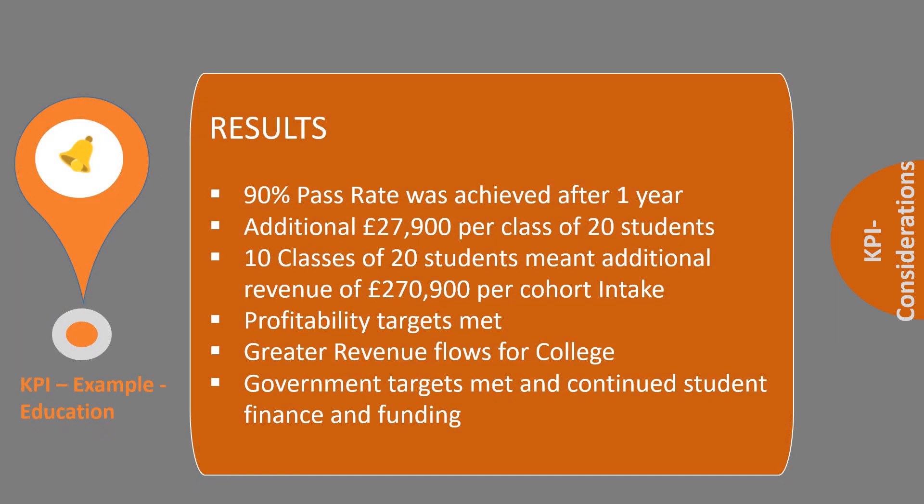The results of this were that after one year, putting all these additional support packages, changes, processes and staff training into practice, we were attaining per class a 90% pass rate. On a class of 20 students, that was an additional £27,900 per class moving up to level 6. With 10 classes of 20 students achieving 90%, that meant an additional revenue of students progressing on to level 6 of £270,900 per cohort intake.